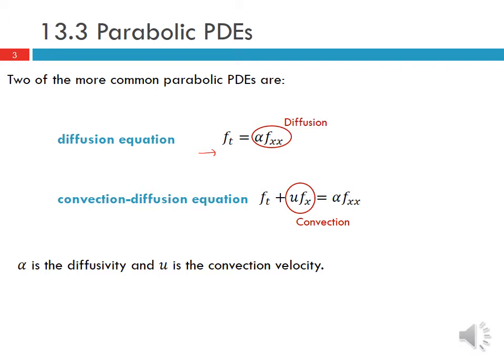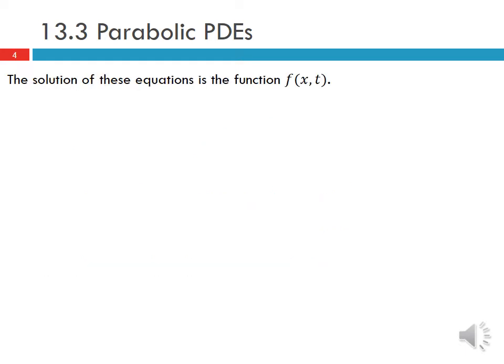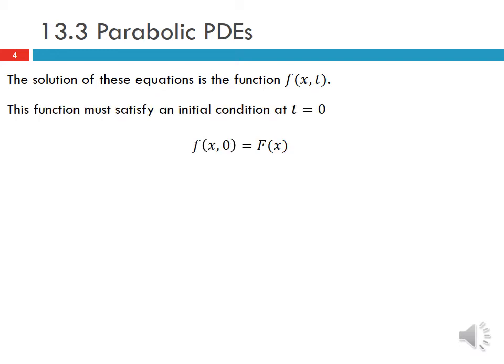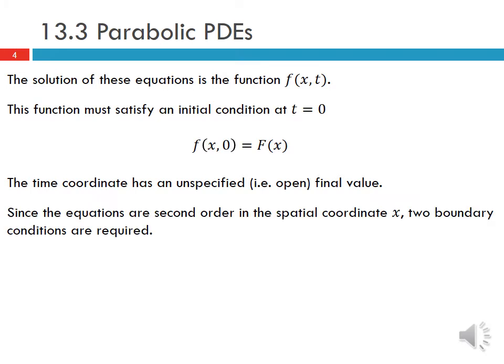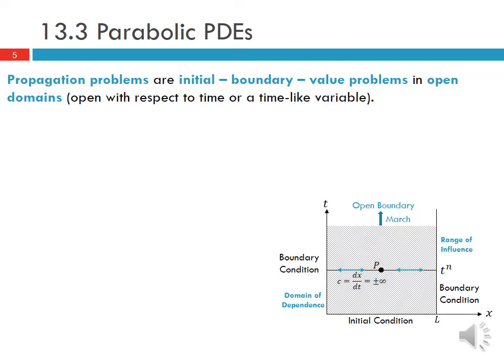Different forms of these equations appear in different applications across engineering. The solution of these equations is a function f of x and t which must satisfy an initial condition at t equal to 0, written as f(x,0) equal to some function of x. The time coordinate has an unspecified or open final value. Since the equations are second order in the spatial coordinate x, two boundary conditions are required. Parabolic PDEs are propagation problems, which are essentially initial value problems in an open domain with respect to time or some time-like variable.